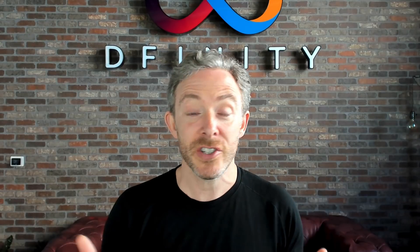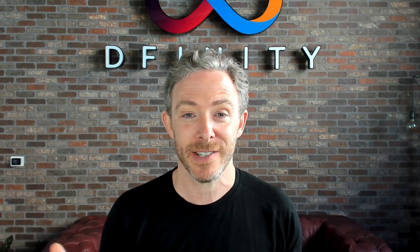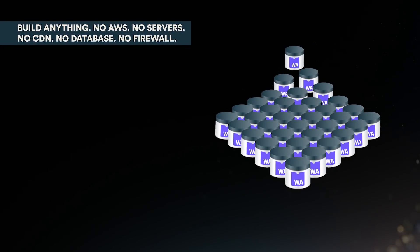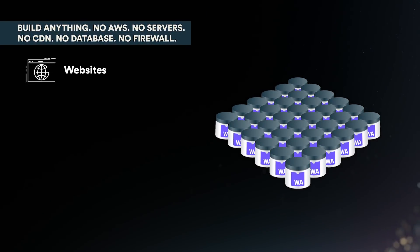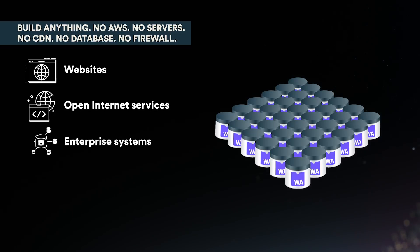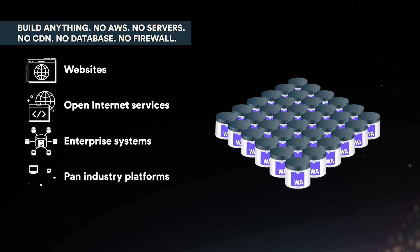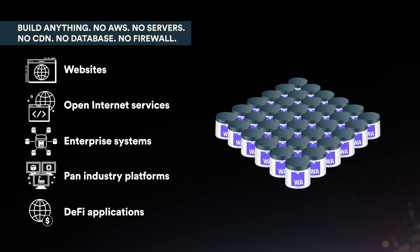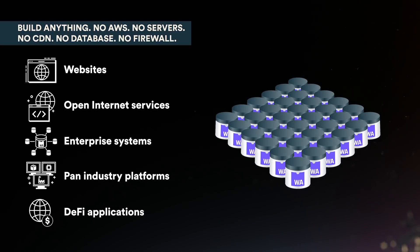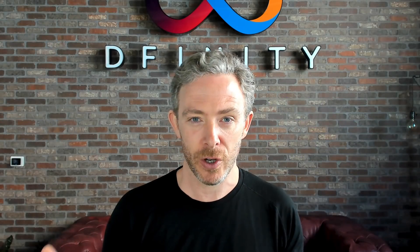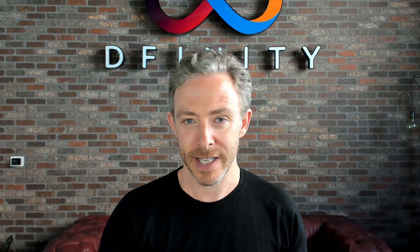The internet computer is tremendously powerful. You can use it to build just about anything without AWS servers, CDNs, databases, firewalls, and so on. You can use it to build websites, open internet services, enterprise systems, pan-industry systems, and you can use it for all of those classic applications of smart contracts like DeFi.